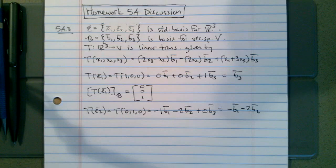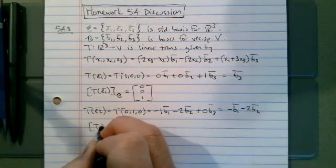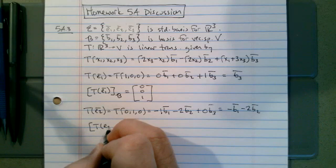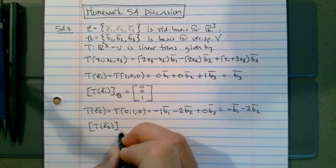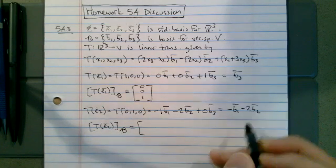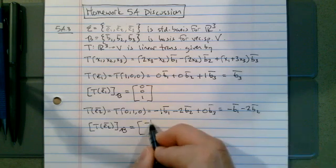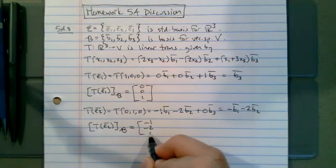A separate thing would be the coordinates of the image of E2 relative to the basis B, and that would be negative 1, negative 2, 0.